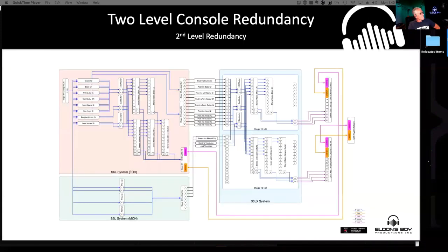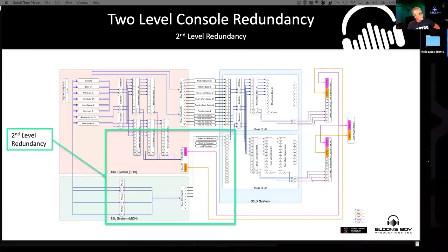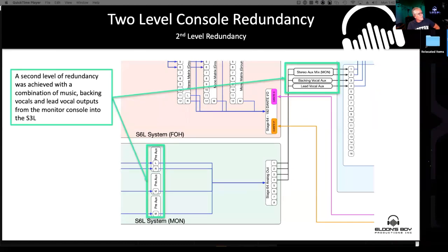The second level of redundancy involved the monitor console. I had Greg, our monitor guy, build a set of stems off of his console. I went up to the console, got it sorted to something usable. We took analog outputs from his system and brought them into analog inputs on the S3LX — two significant levels of redundancy. I broke it into music, backing vocals, and lead vocal — basically four outputs from him — but we were still mixing on the S3LX.